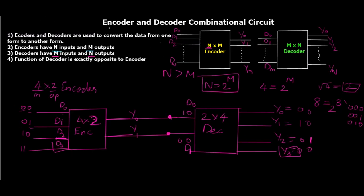This was the basic explanation of what encoders and decoders are, what they do, and where they are applied. The key formula is n equals 2 raised to m: for an encoder, n is the number of inputs and m is the number of outputs; for a decoder it is exactly opposite. Encoders and decoders are used to convert different formats of data and also to reduce the number of transmission lines — four lines of data transmitted on just two lines.